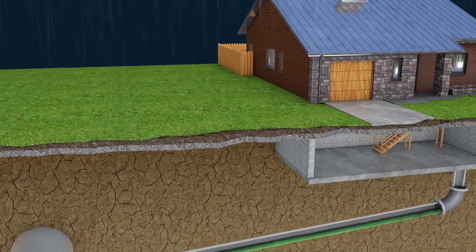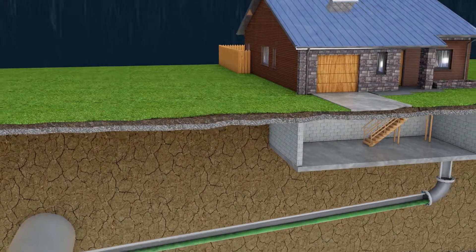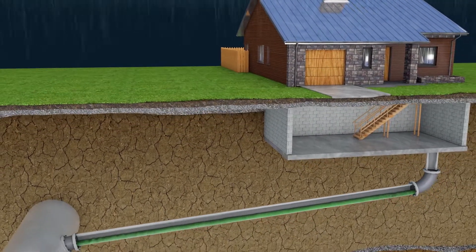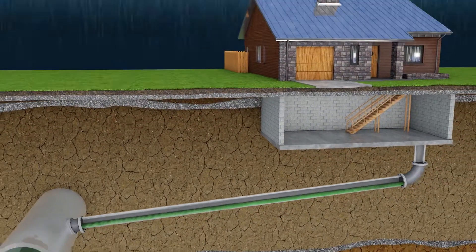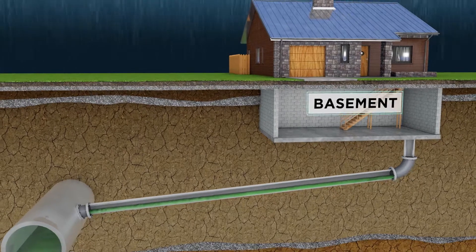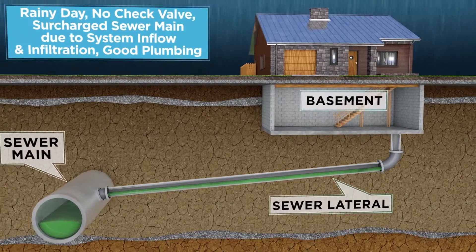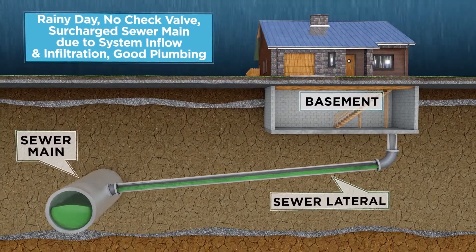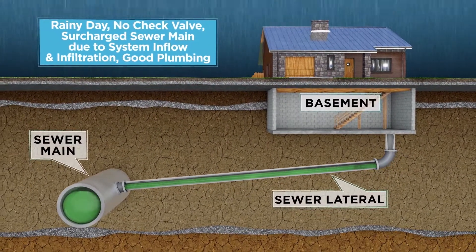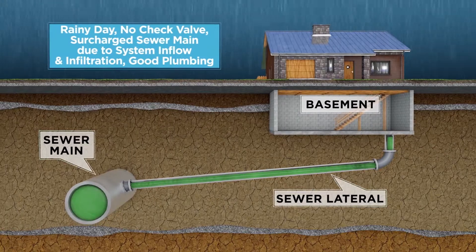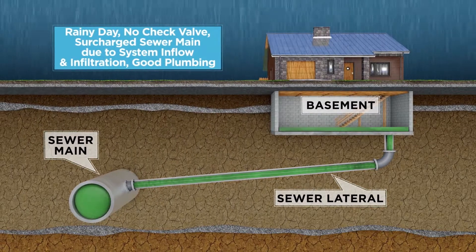In rainy conditions, the flow in the system increases, causing a backflow into the basement. When the pipes get full, water seeks the path of least resistance, which in this case is the sewer lateral line.